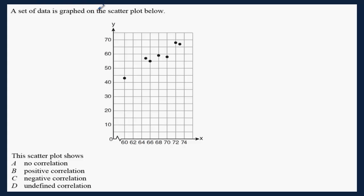A set of data is graphed on the scatter plot below. This scatter plot shows no correlation, positive correlation, negative correlation, or undefined correlation.